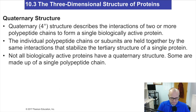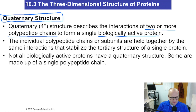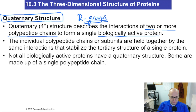Quaternary structure occurs when two or more polypeptide chains find each other in solution and make a single biologically active protein. These quaternary structures are held together by the R groups — the same thing that makes tertiary structure. Not every biologically active protein has a quaternary structure; most stop at tertiary, but some do have quaternary structures.